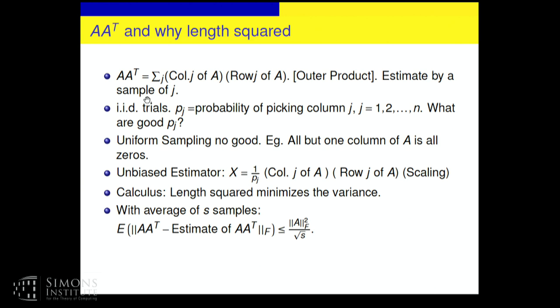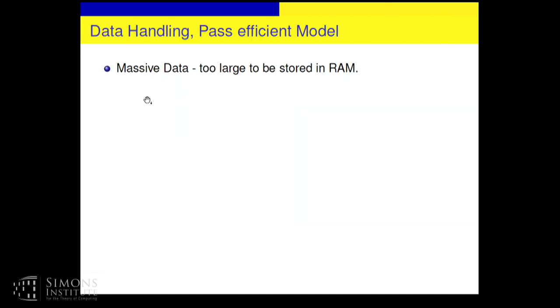Then you can prove something like this, where the error goes down as the number of samples goes up to infinity. This is for AA transpose, that length squared minimizes the variance. So this was in that paper. We could also do matrix multiplication using that in order of star n squared, star involves factors depending on S. So matrix multiplication, you can, of course, do better than n cubed, but n squared is not known. But this can do approximately in n squared.